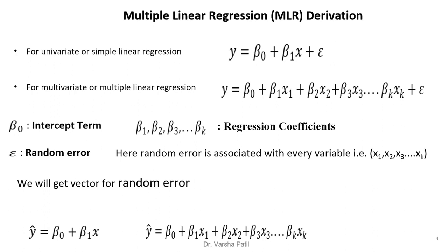Here β₀ is the intercept term and β₁ to βₖ are the regression coefficients or slopes of the line equation. ε is the random error. Since random error is associated with every observation, we get a vector for the random error. When we predict the values of β₀ to βₖ using an optimization technique such as least squares or maximum likelihood estimation, we represent that equation as ŷ, because it contains all predicted values.